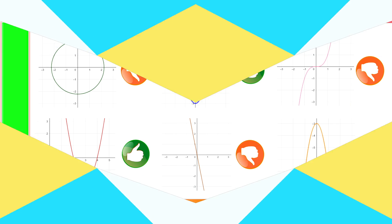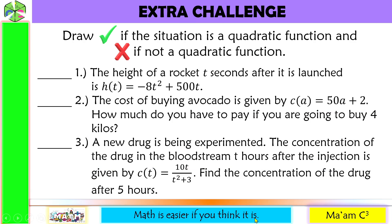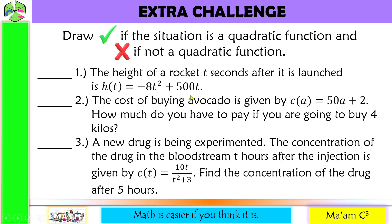This last one is a parabola that opens downward — thumbs up. Now for the extra challenge: draw a check mark if the situation is a quadratic function, and a cross if not. The height of a rocket t seconds after launch is h of t equals negative 8t squared plus 500t. The independent variable is raised to the second power, so this is a quadratic function.